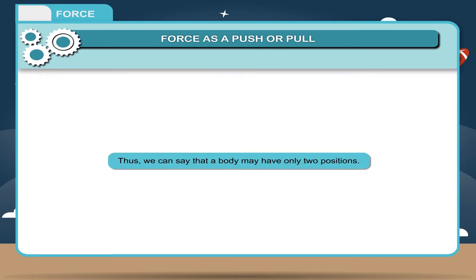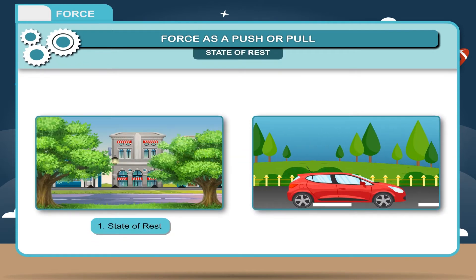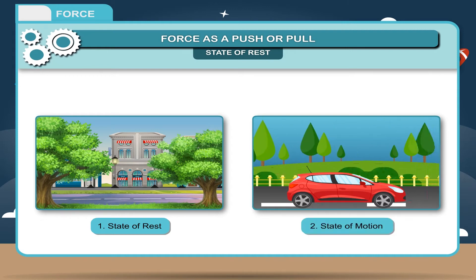Thus, we can say that a body may have only two positions: 1. State of rest, and 2. State of motion.